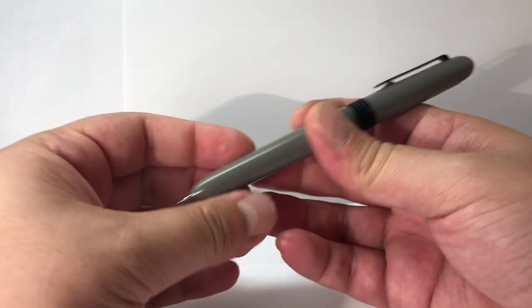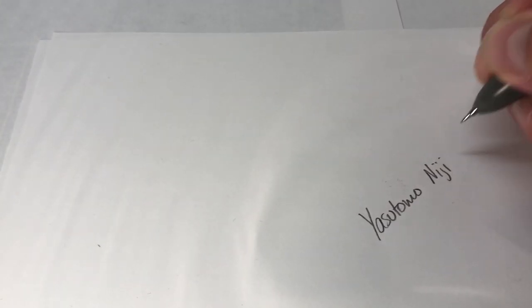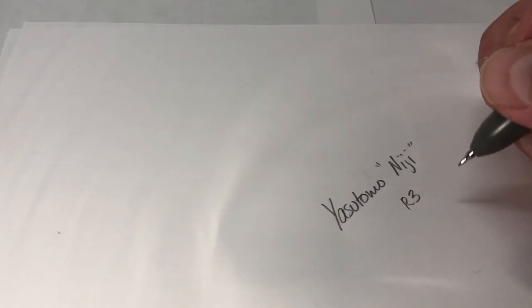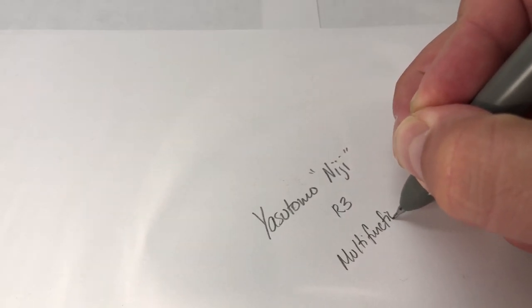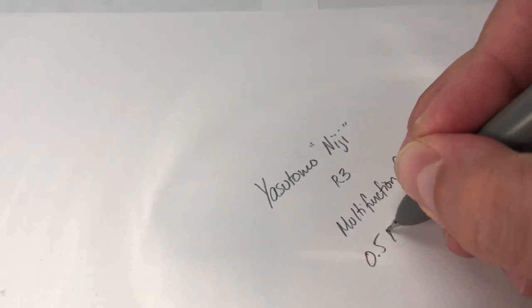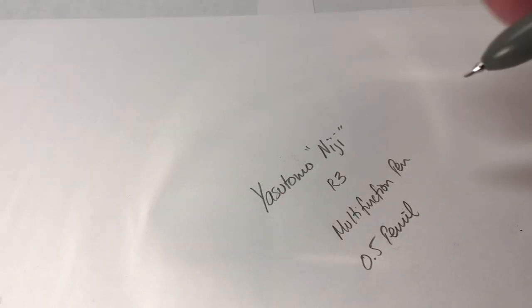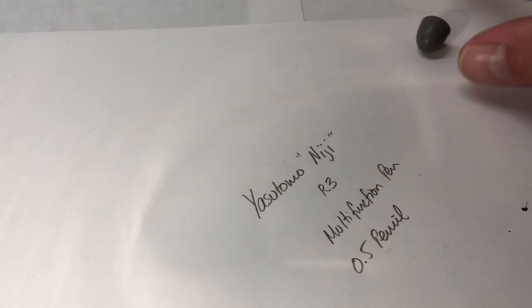So now let's give it a quick look on a test of this pencil. Let's see. So this is the Yasutomo Niji, or just Niji. I'm going to write with the pencil. And it has a 0.5 pencil. Let's check actually the eraser. Let's see.